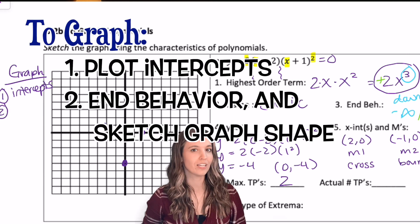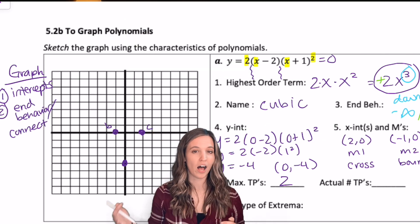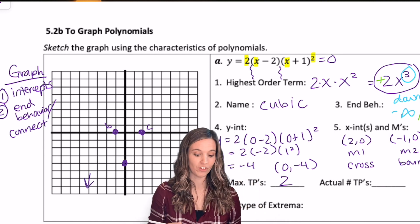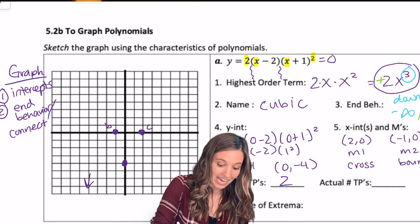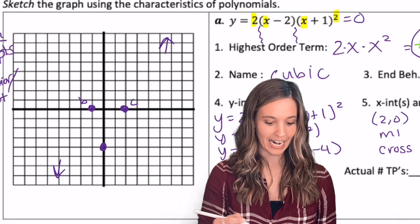Step two is to plot my end behavior and connect my graph. So my end behavior is down up. So when my x's are really small, my graph's headed towards negative infinity. When my x's are getting really big, my graph is headed towards positive infinity. So now we got to connect this.